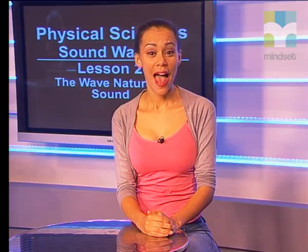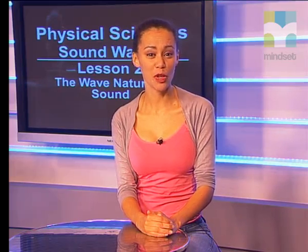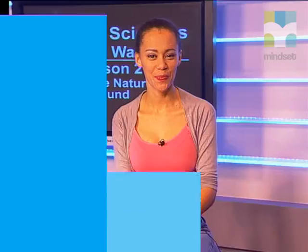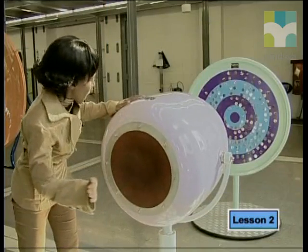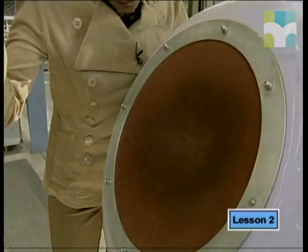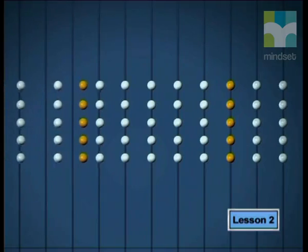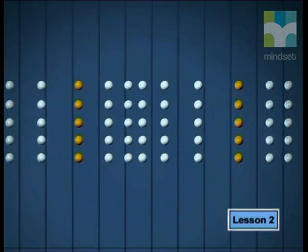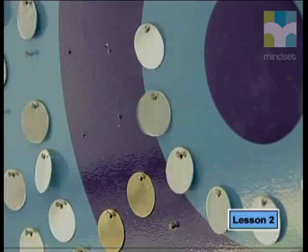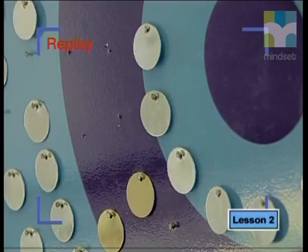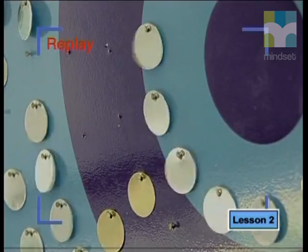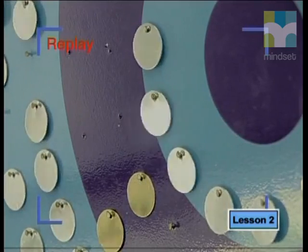Let us join Nelly once more as she reminds us about the sound cannon experiment we saw in lesson one, to help us identify which wave type sound is. Do you see that the membrane of the drum is vibrating from left to right? If the source — that is the membrane — is moving from left to right, it follows that the particles will be pushed to move in the same direction, from left to right. Now look closely at how the sound wave is disturbing the tags. The tags are also being pushed back and forth, and it would seem that energy is being transported through the air in the same direction as the movement of the particles.